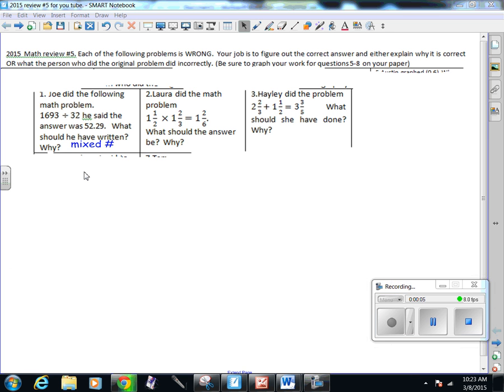Math review number five. This is a little bit different than the ones we've been doing because all of the answers are provided, but all of the answers are wrong. So what you have to do is rework the questions and figure out what the person did incorrectly. You're going to redo the questions that are given to you, have the right answer, and then I would like you to tell me why the person did it wrong.